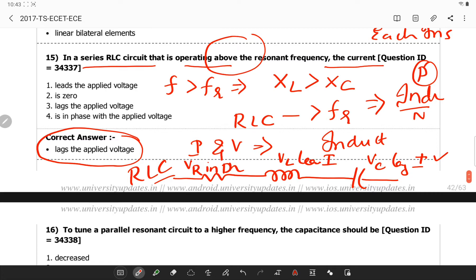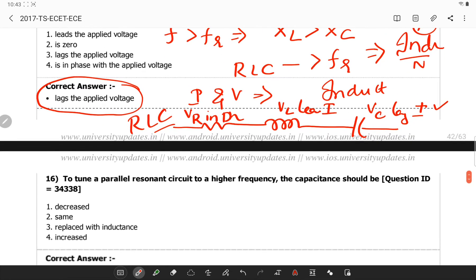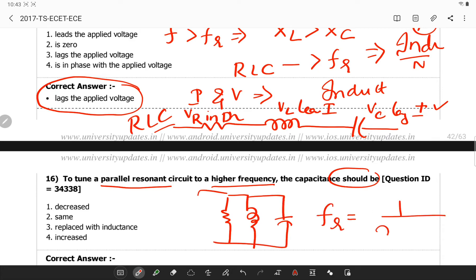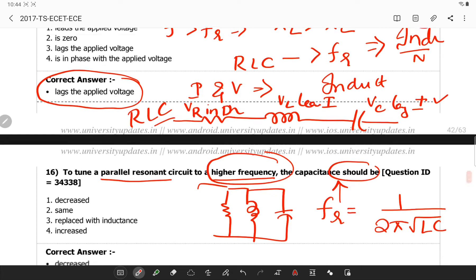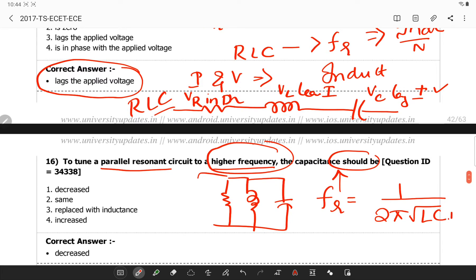To tune a parallel resonant circuit at a higher frequency, the capacitance should be. If you observe a parallel RLC circuit, the resonant frequency Fr will be 1 by 2 pi into root Lc. Now, what is he asking? To tune it to a higher frequency. If this must be increased, automatically this capacitance, so if your fraction value is to increase, the denominator value is to be decreased.